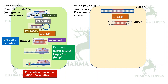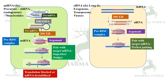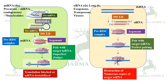siRNA can be administered exogenously via transposons or viruses. It is also a double-stranded RNA. With the help of Dicer, it gets converted to siRNA, which then binds to the RNA-induced silencing complex (RISC) and Argonaute. This complex pairs perfectly with the target mRNA, which is then destabilized or its transcription is affected.